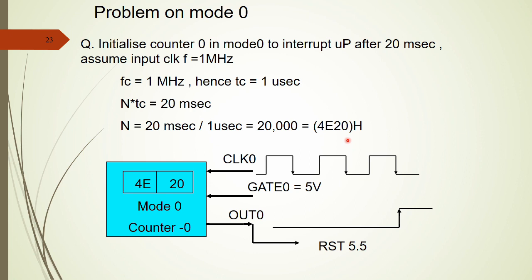This count value, when loaded into counter 0, will cause the PIT to produce a periodic interrupt after 20 milliseconds, which in turn can be used to trigger interrupt RST 5.5 on the 8085 microprocessor.